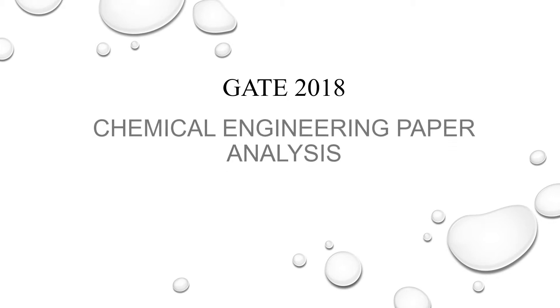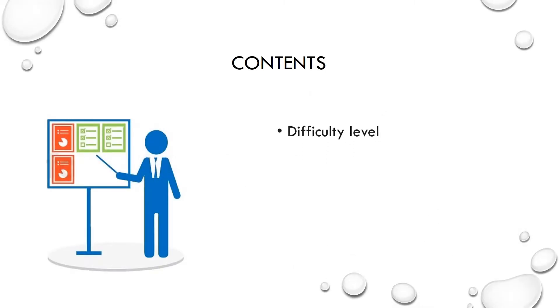So guys, today we are here with the GATE Chemical Engineering 2018 paper analysis video where we mainly touch upon the subject-wise distributions and their weightage. We kick off our analysis with the difficulty level of the paper, followed by weightage per subject. Then we go to the expected approach for this paper, and finally we see the predicted cutoff, which is the need of the hour.